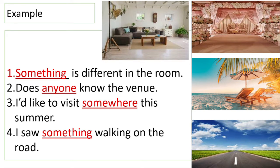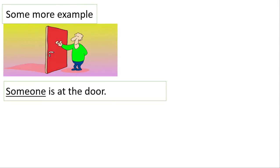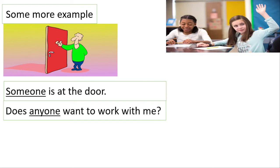Fourth example: I saw dash walking on the road. The answer is: I saw something walking on the road. So 'something' is an indirect pronoun. Next: dash is at the door. The answer is: someone is at the door.